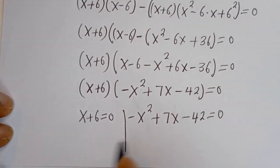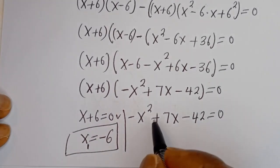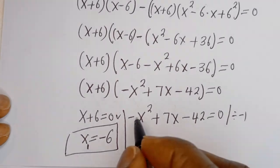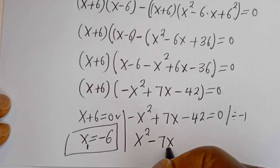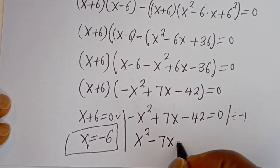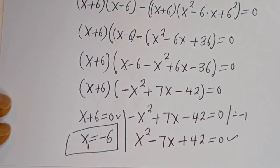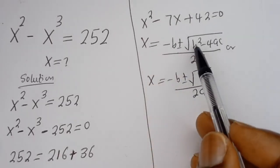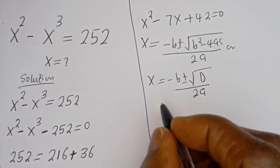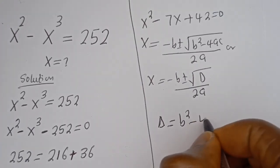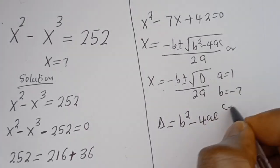From the first case, s plus 6 equals 0, giving S1 equals negative 6. For the second case, we divide the equation negative s squared plus 7s minus 42 equals 0 by negative 1, yielding s squared minus 7s plus 42 equals 0. This is a quadratic equation solved using the quadratic formula: s equals negative B plus or minus square root of B squared minus 4AC, all over 2A, where A equals 1, B equals negative 7, C equals 42.